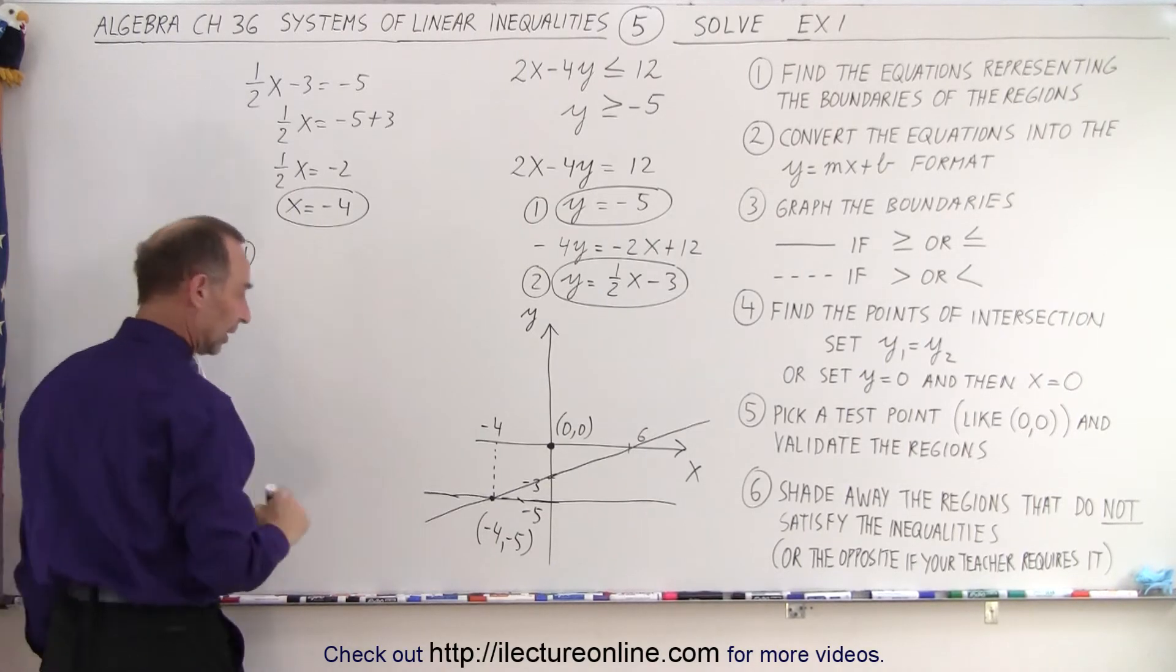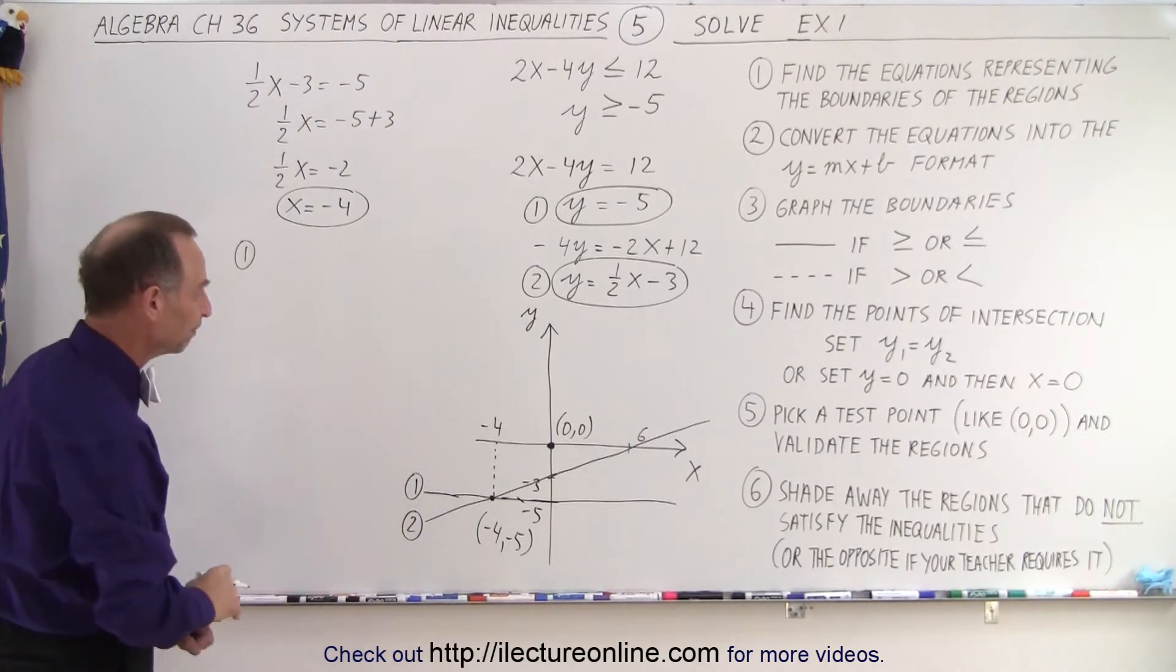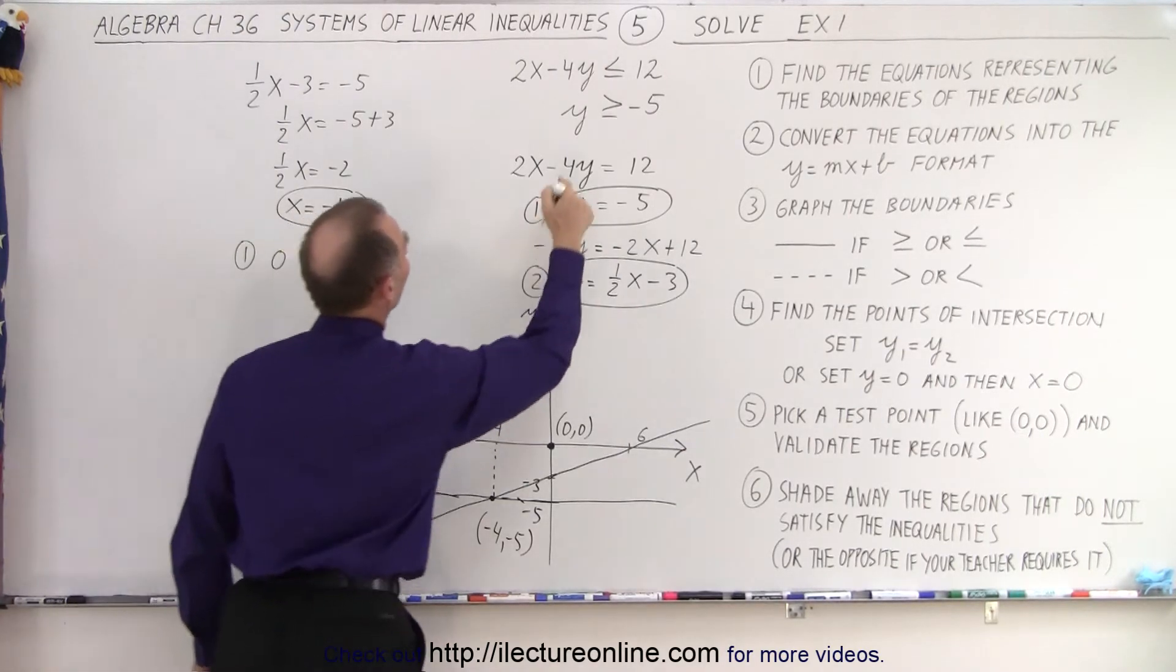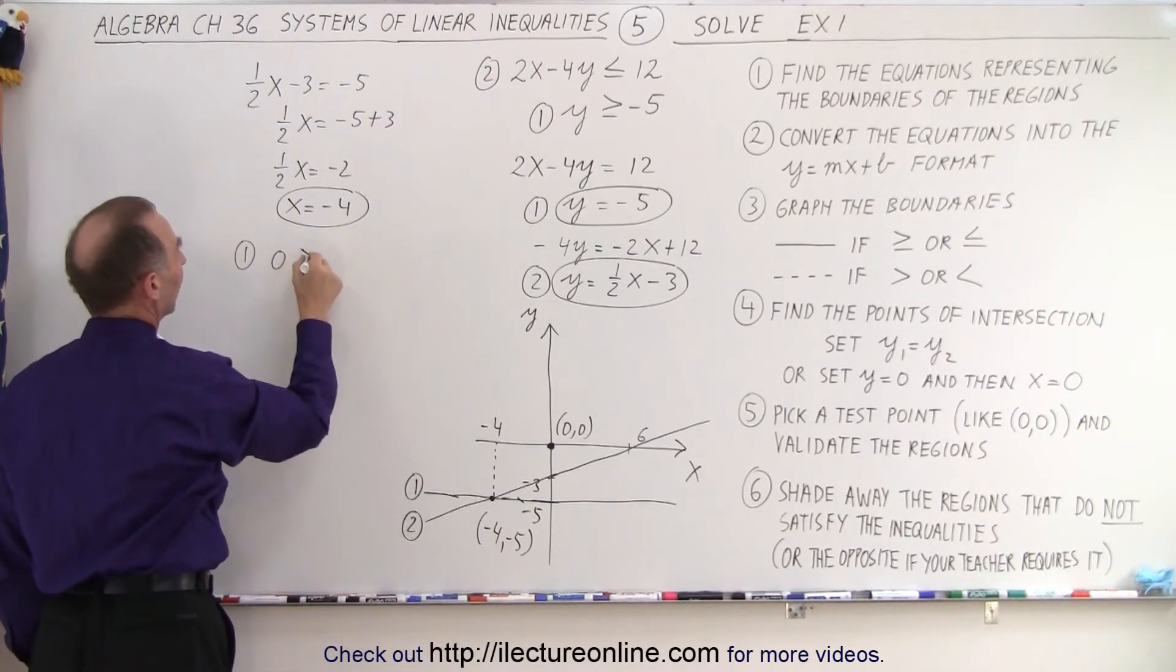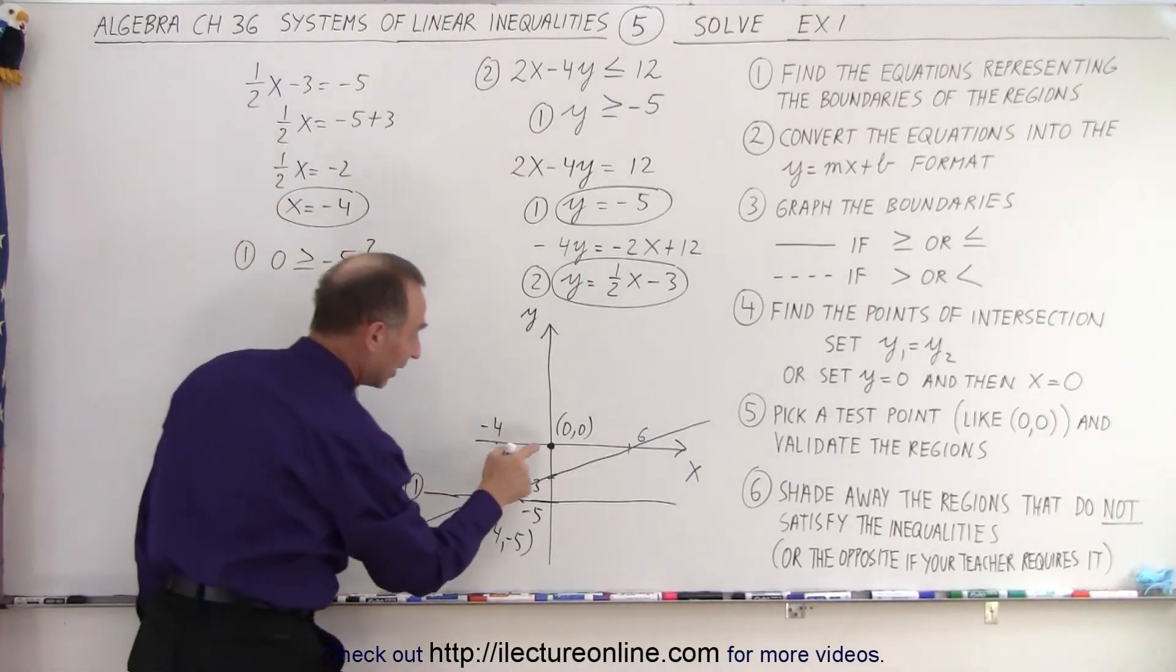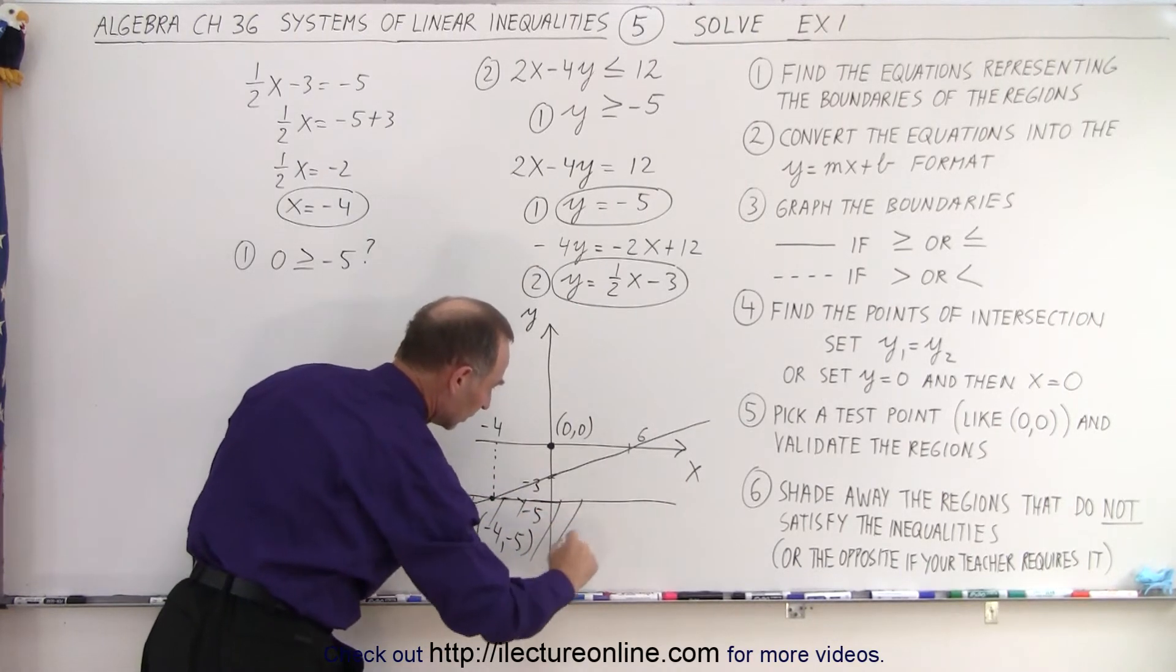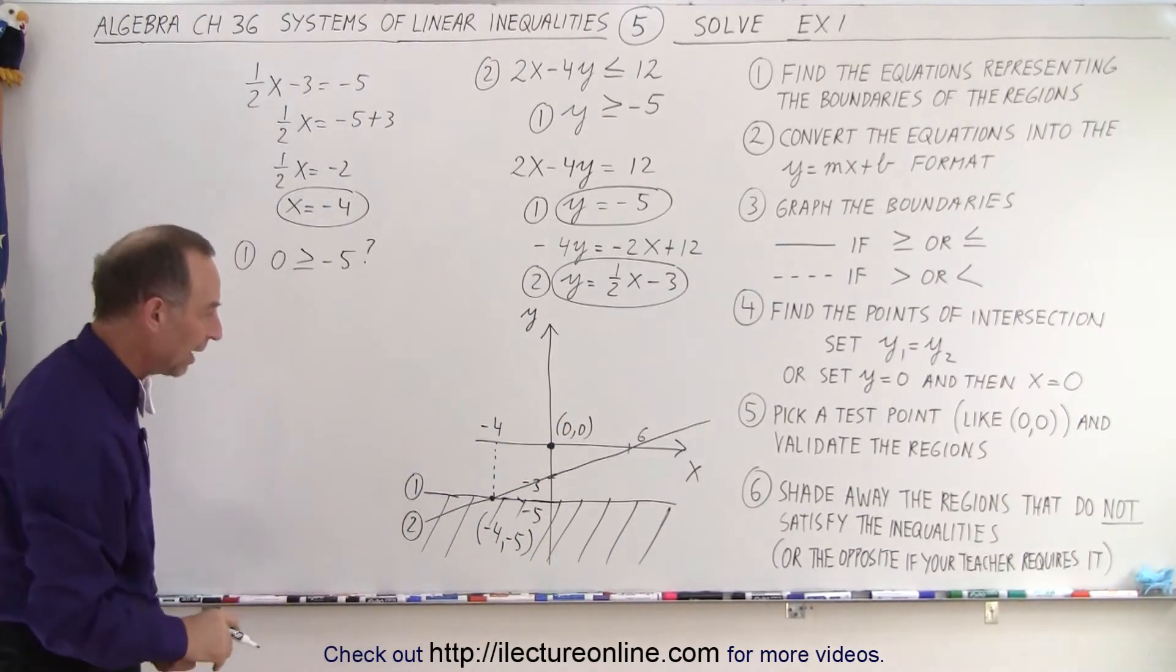So equation number 1, and of course I didn't label them yet, so this was equation number 1, and this was equation number 2. It's always a good idea to label them. Okay, let's take equation number 1, and we plug in 0 equals, oh, not equals. We want to go ahead and put the inequality sign in. So up here we use this equation, inequality 1, inequality 2, and so we end up with 0 greater than or equal to minus 5, question mark. And the answer is yes, 0 is indeed bigger than negative 5, which means that this point lies in the correct region relative to this boundary right here. That means we don't want the boundary down below. So we don't want that region.